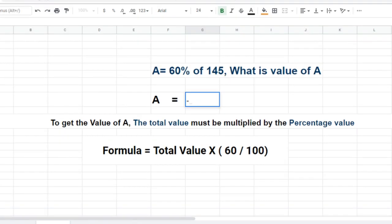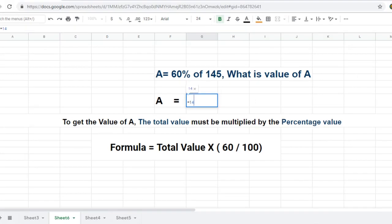To get the value of A, the total value must be multiplied by the percentage value. The formula equals total value multiplied by 60 divided by 100. The answer after applying the values to the formula is 87.